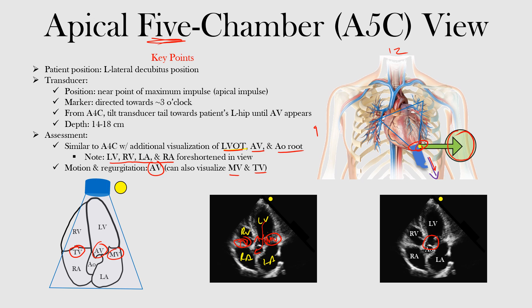Let's review: the patient is in the left lateral decubitus position. Put the transducer at the apical impulse, direct the marker towards 3 o'clock, similar to the apical four-chamber view. From the apical four-chamber view, tilt the transducer tail towards the patient's left hip until the aortic valve appears. Depth can be similar — 14 to 18 centimeters, adjust as needed. The fifth chamber is the aorta, and we can see the left ventricular outflow tract, aortic valve, and aortic root — that's what differs from the apical four-chamber view.